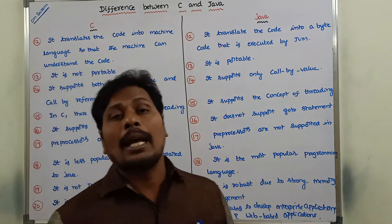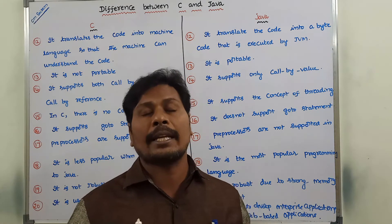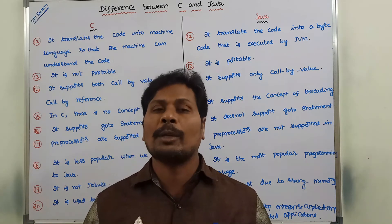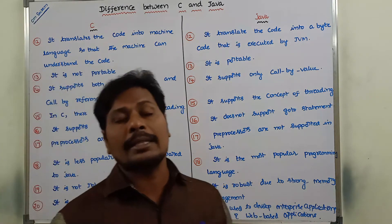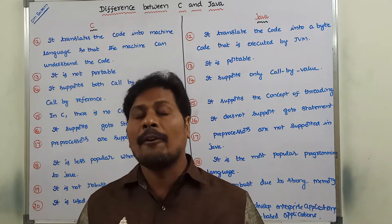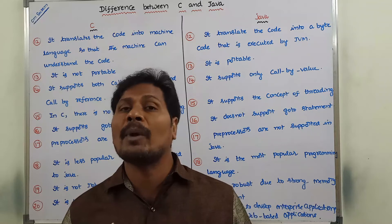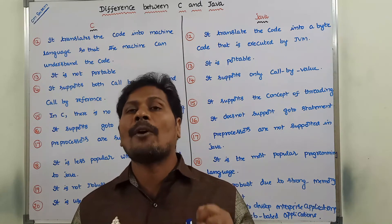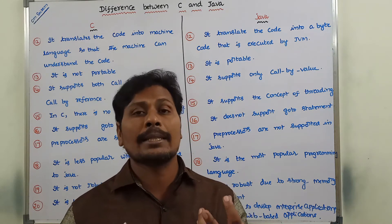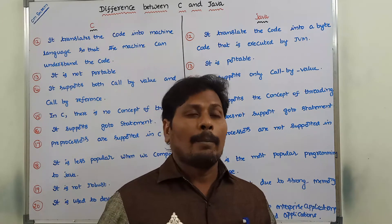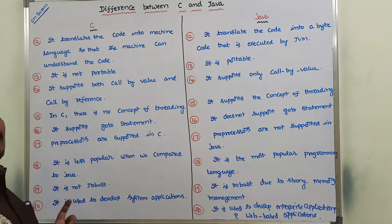Next: C language is less popular, whereas Java is the most popular programming language. Next: C language is not robust, whereas Java is robust due to strong memory management. Because of the strong memory management technique used in Java, we can say that Java is robust, whereas C is not robust.